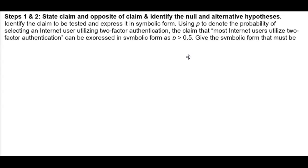Now, identify the claim to be tested and express it in symbolic form. We're using P to denote the probability of selecting an Internet user utilizing two-factor authentication. The claim that most Internet users utilize two-factor authentication can be expressed in the symbolic form as P is greater than 0.5.